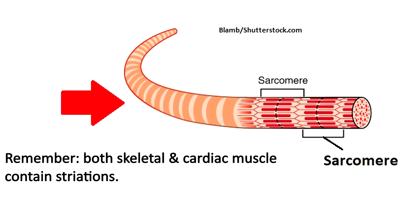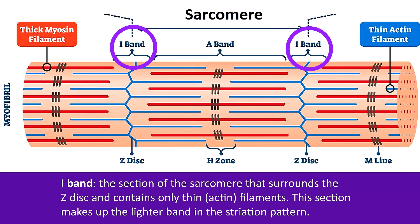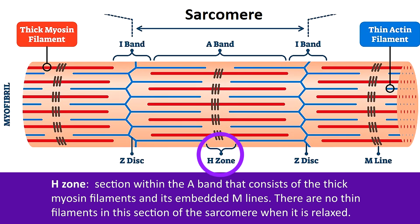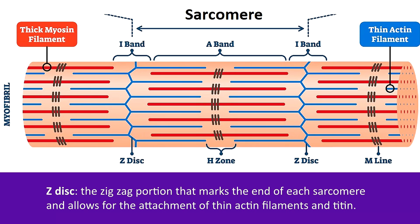They both contain striations. First, there is an A-band on each sarcomere, which is a section that contains the entire length of the thick myosin filaments, along with an overlapping portion of the thin actin filaments. This section makes up the dark part of the striation pattern. There's also an I-band, which is the section of the sarcomere that surrounds the Z-disc and contains only thin actin filaments, and this section makes up the lighter band in the striation pattern. The H-zone is the section within the A-band that consists of the thick myosin filaments and its embedded M-lines. There are no thin filaments in this section of the sarcomere when it's relaxed. And again, the Z-disc is that zigzag portion that marks the end of each sarcomere and allows for the attachment of the actin filaments and titin.